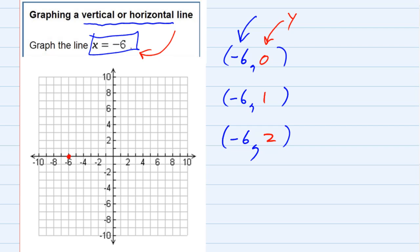Negative six one, which is the second point, and negative six two. You can see that the y value could be anything, but the x value always has to be negative six.